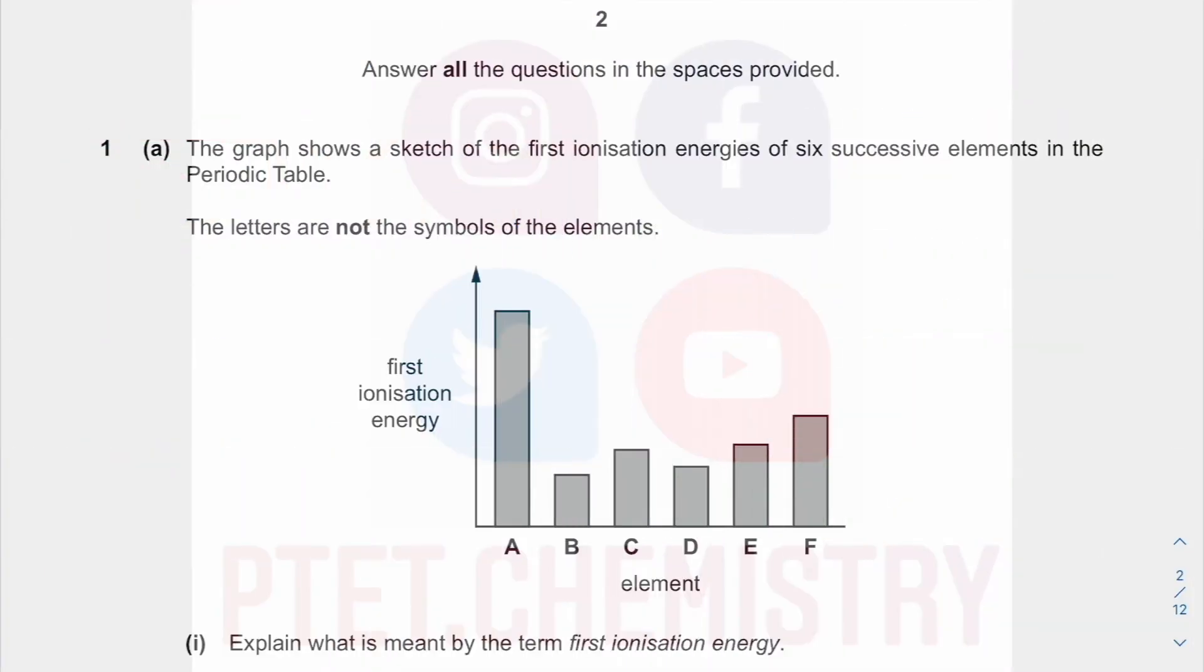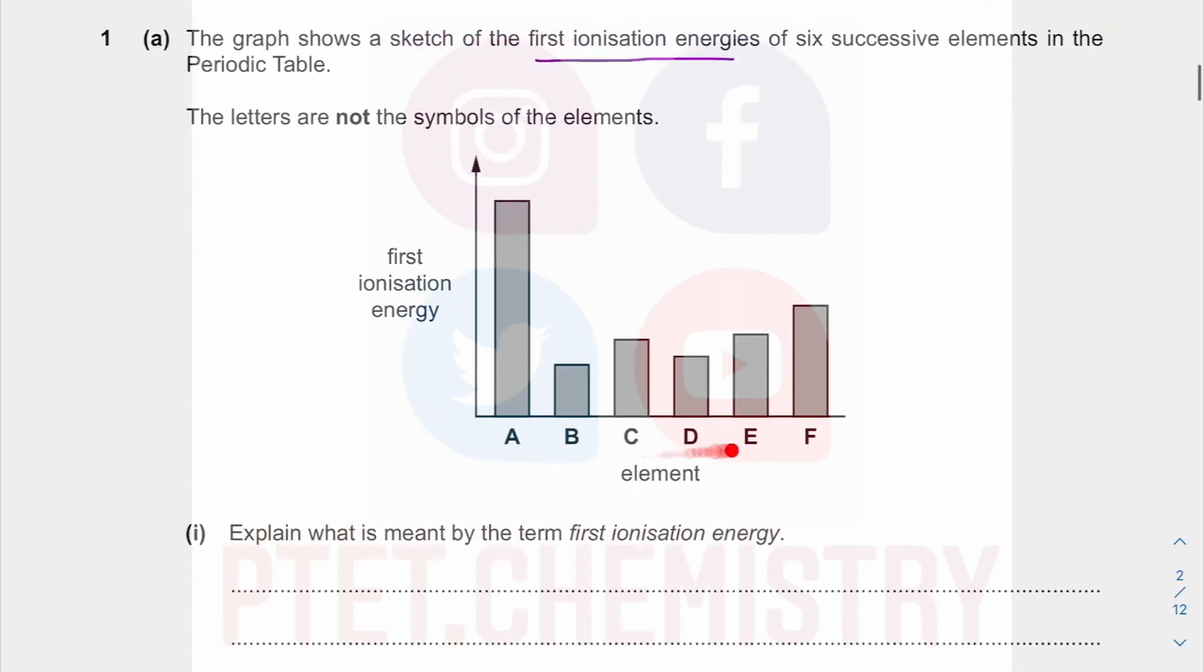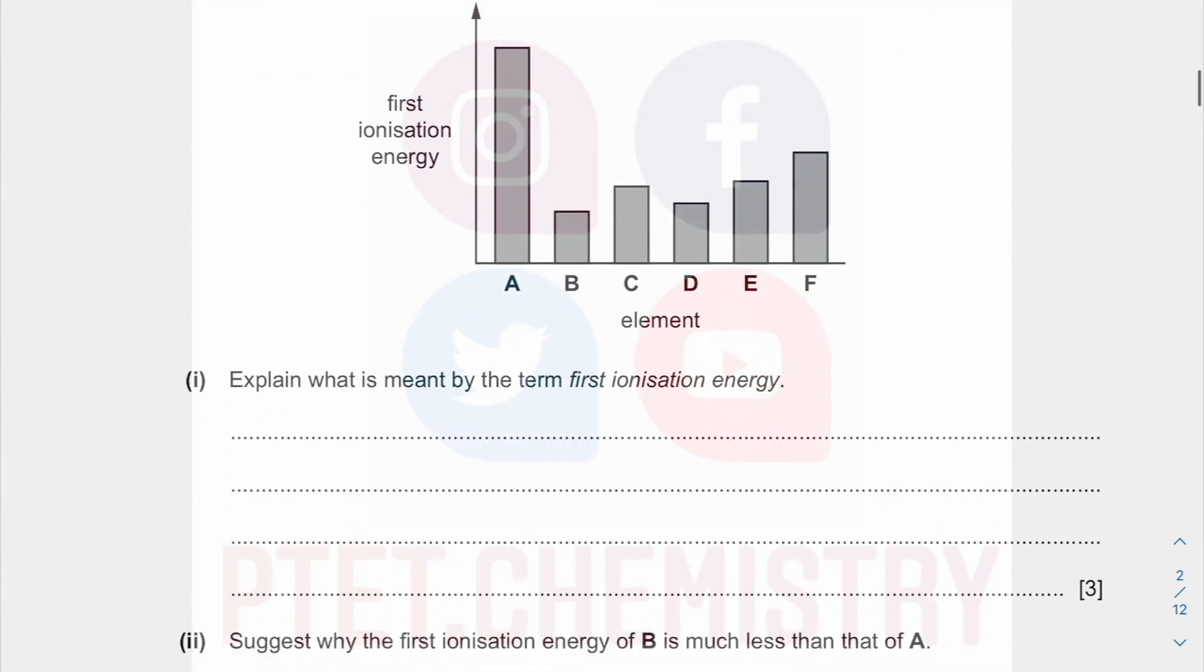The first question is asking on first ionization energy. So this is the idea of inorganic chemistry, to do with trends, to do with structure bonding. So here's to do with atomic structure. So nice and easy and very generous for three marks just to define first ionization energy. So if you're ever unsure what we're talking about,